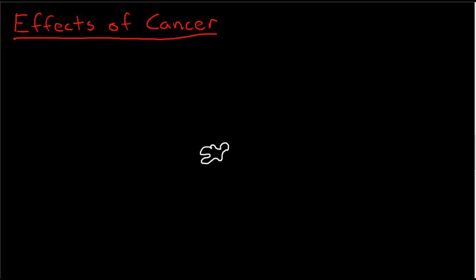There are really five ways that cancer has its significant effects on the body. The first is that it has aberrant proteins.